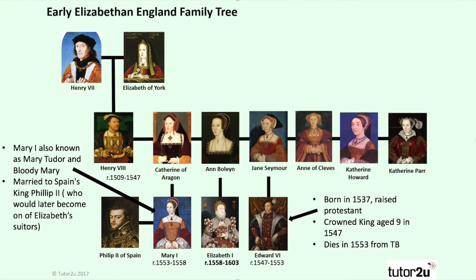Edward VI then becomes king first. He was crowned only aged nine in 1547, however in 1553 he dies from TB. Interestingly, the throne now doesn't go to Mary I but goes to a woman named Lady Jane Grey. Lady Jane Grey was actually fifth in line to the throne, but it was Edward's personal choice as she was Protestant.